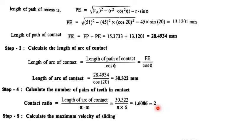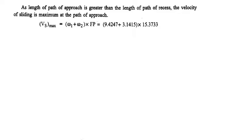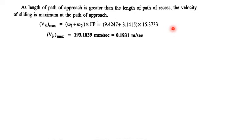Step 4: Maximum velocity of sliding. The formula is Vs = (ω₁ + ω₂) × (path of approach distance). First find ω₂ using gear ratio: G = ω₁/ω₂, so ω₂ = 9.4247/3 = 3.14 rad/s. Maximum sliding velocity Vs = (ω₁ + ω₂) × FP = (9.42 + 3.14) × 15.37 = 193.18 mm/s (or 0.193 m/s).